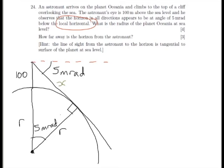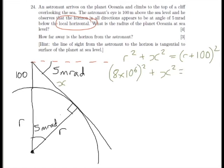So we know that R squared plus X squared equals, so 8 times 10 to the 6 squared plus X squared equals 8 times 10 to the 6 plus 100 squared.